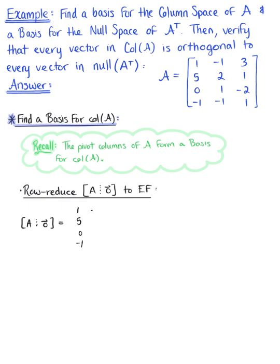We have matrix A augmented with the zero vector, which is equivalent to the coefficient matrix A. The first column is 1, 5, 0, -1; the second column is -1, 2, 1, -1; and the third column is 3, 1, -2, 1. Starting with our first pivot position, we use it to eliminate entries below it. We do -5 times the first row plus the second row, and add the first row to the fourth row.